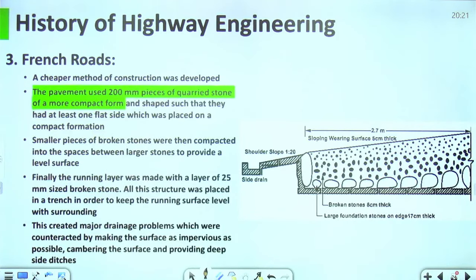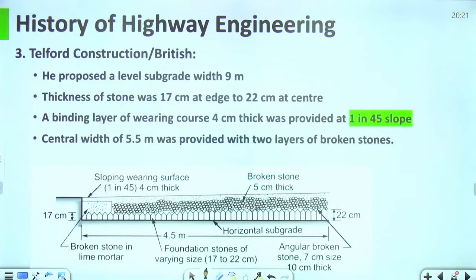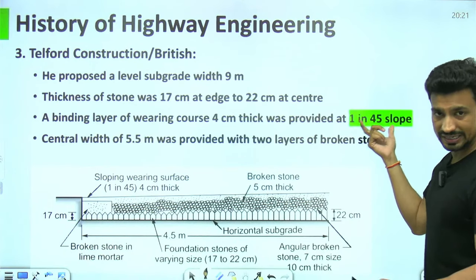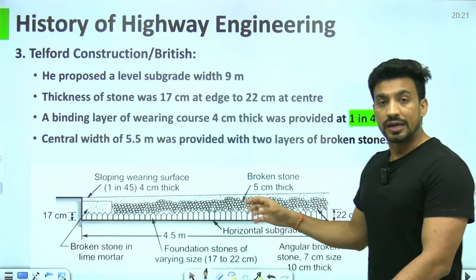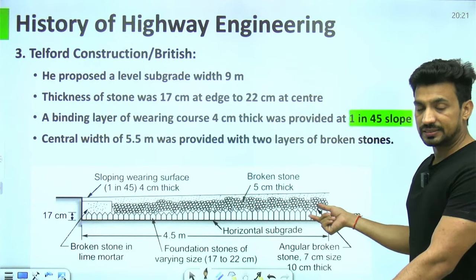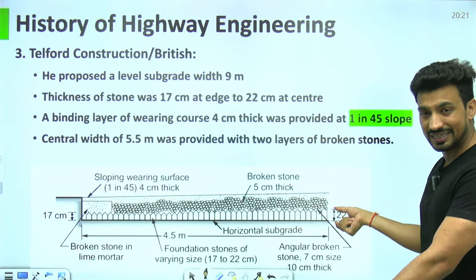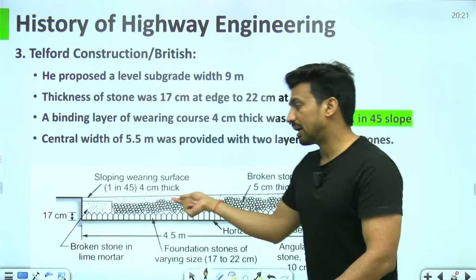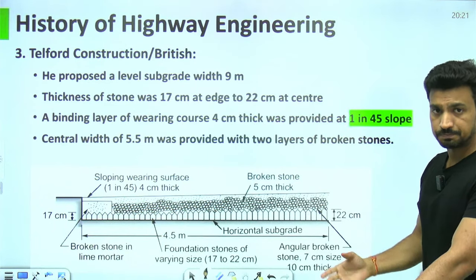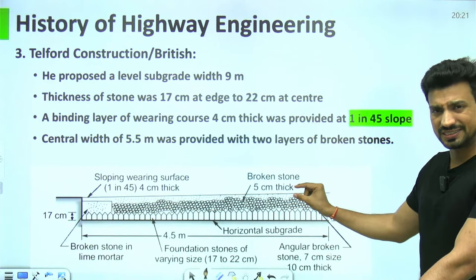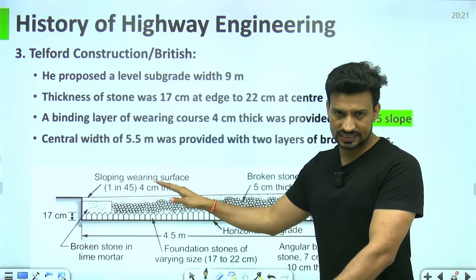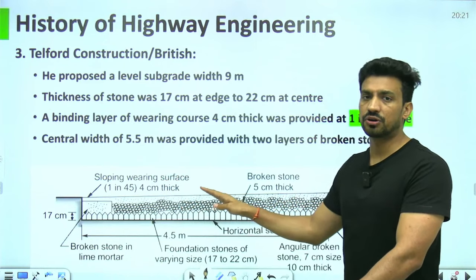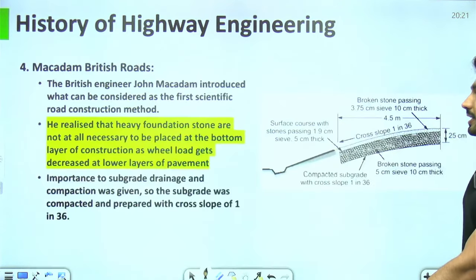French roads में 200 mm के pieces use किये गए — heavy stones नीचे, ऊपर छोटे size के stones। Telford/British construction में भी 1 in 45 का slope था। Bottom पर stone की thickness center पर 22 cm और बाहर जाते-जाते 17 cm हो गई। इसके ऊपर 4 cm का surface bearing course था जिसकी slope फिर से 1 in 45 थी।